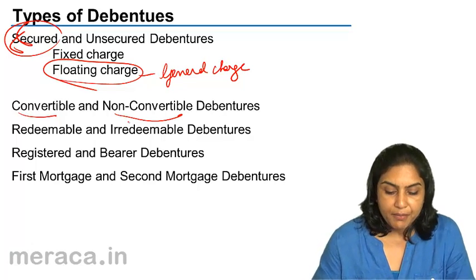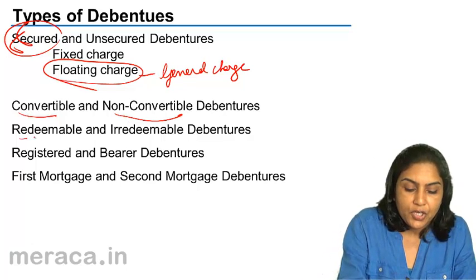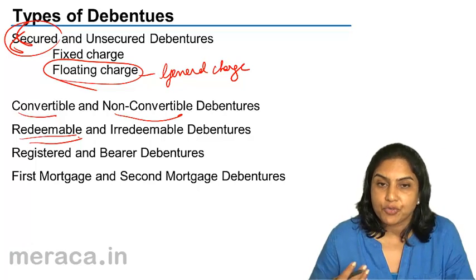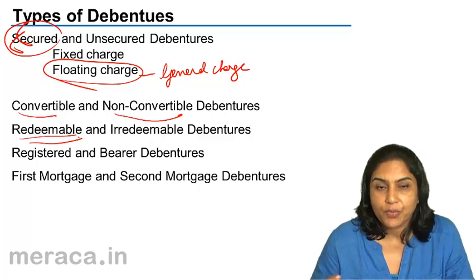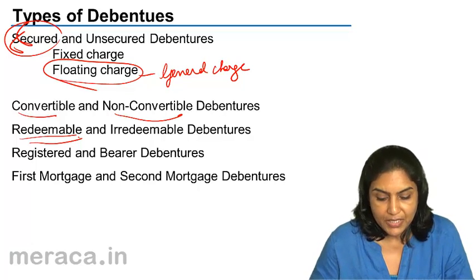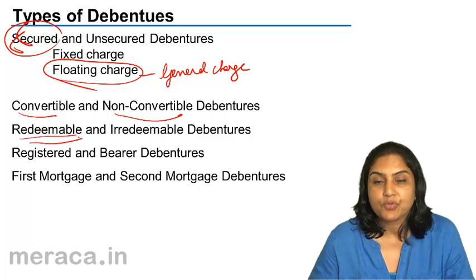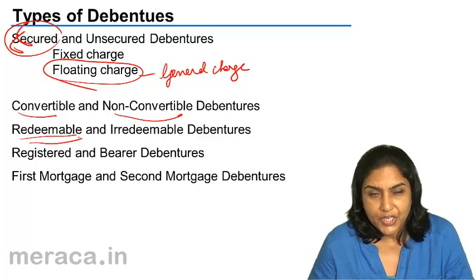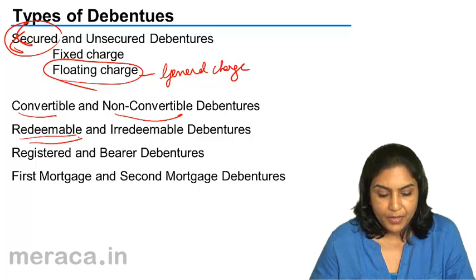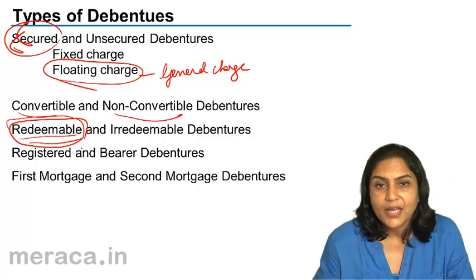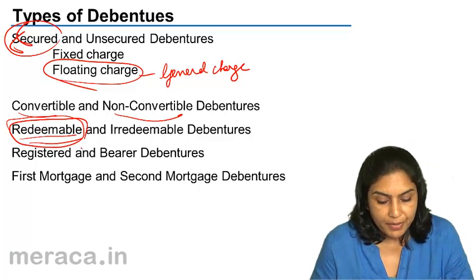Debentures may be redeemable or irredeemable. Usually debentures are redeemable, meaning they have to be repaid after 5 years or 7 years as specified when the issue of debentures is made. Irredeemable would mean that the debenture holders would be paid only on liquidation of the company. Normally, debentures are redeemable — they have to be repaid just like any loan.